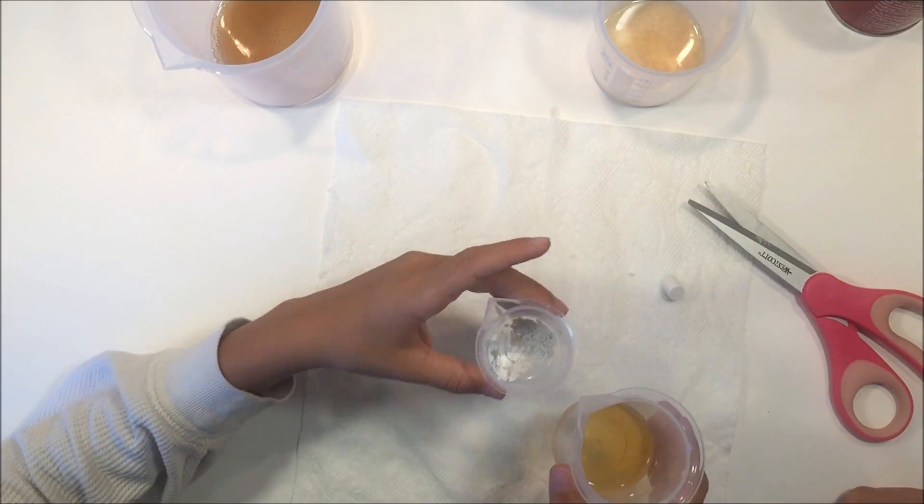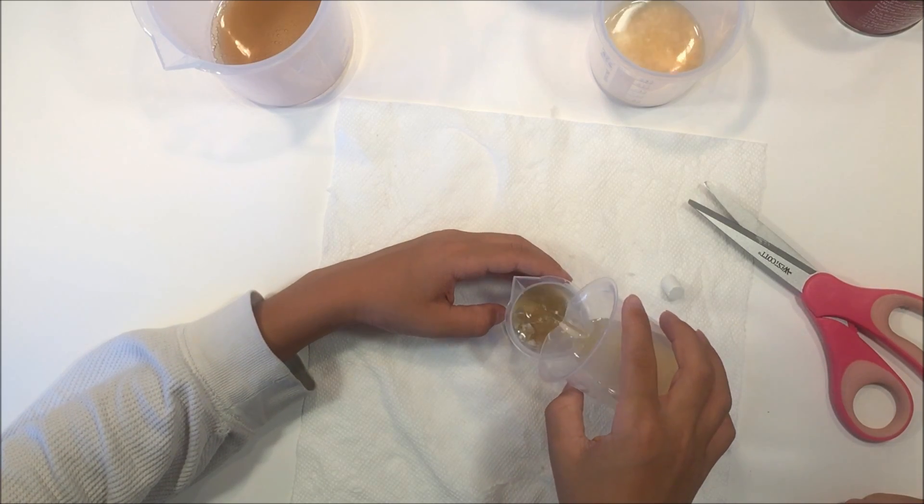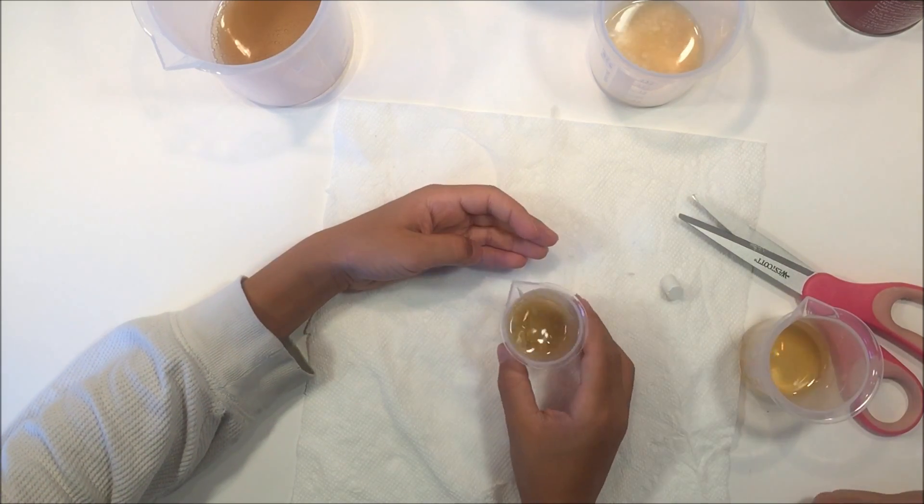When all those little animals fall to the bottom of that sea and then get layers upon layers over them, it forms into a rock or into chalk.